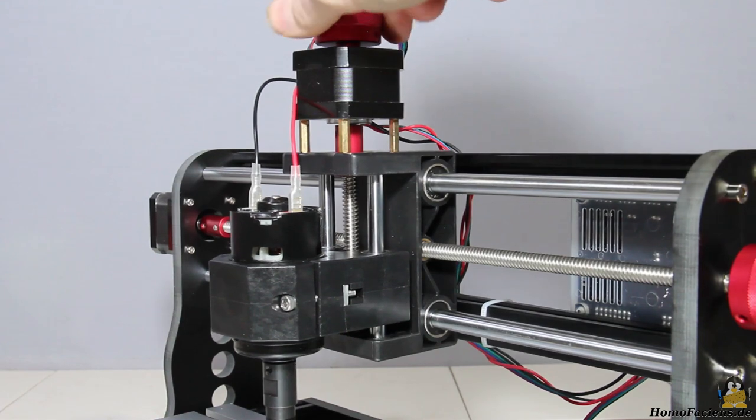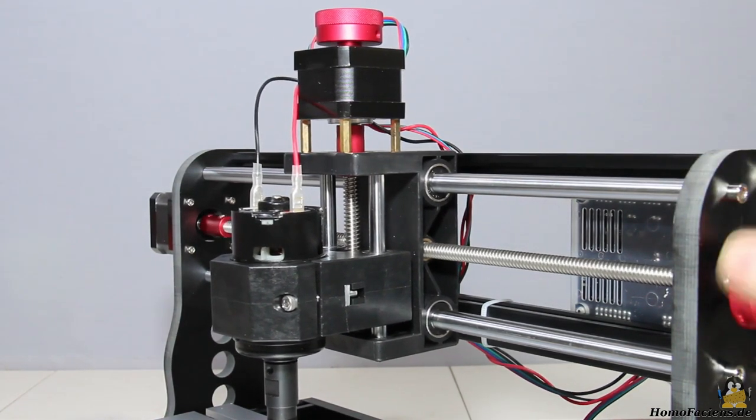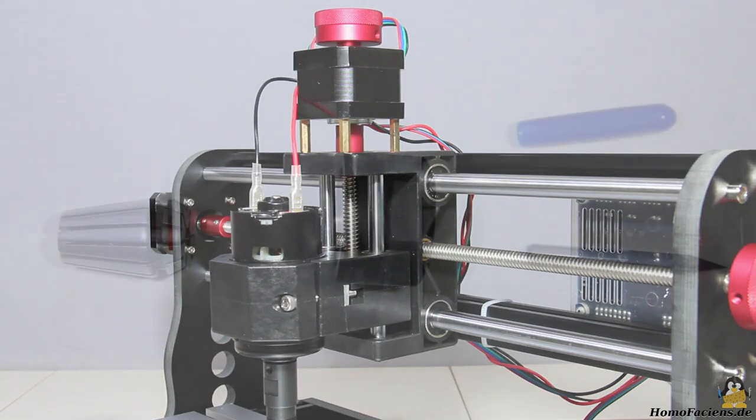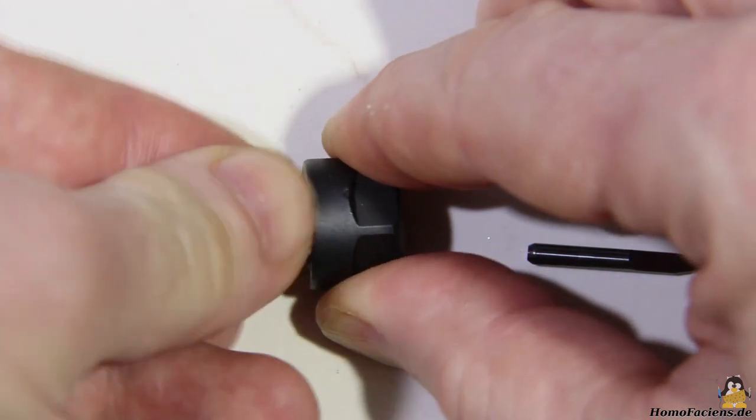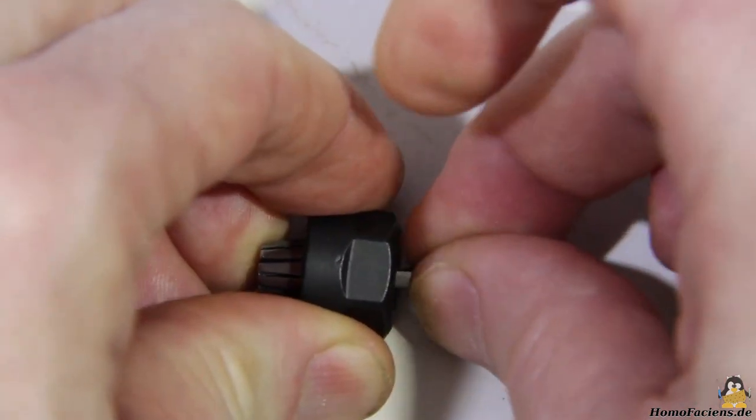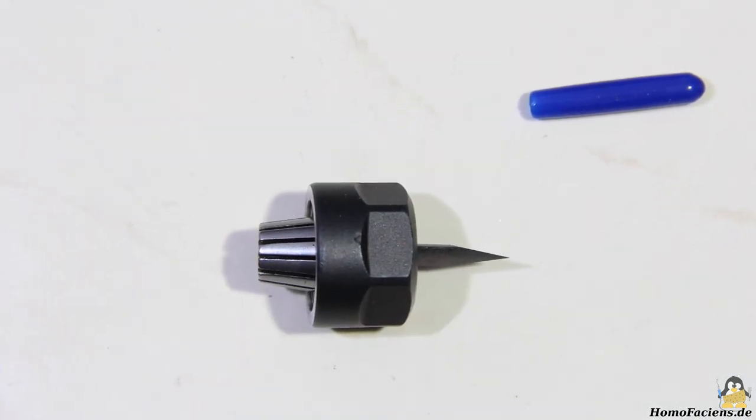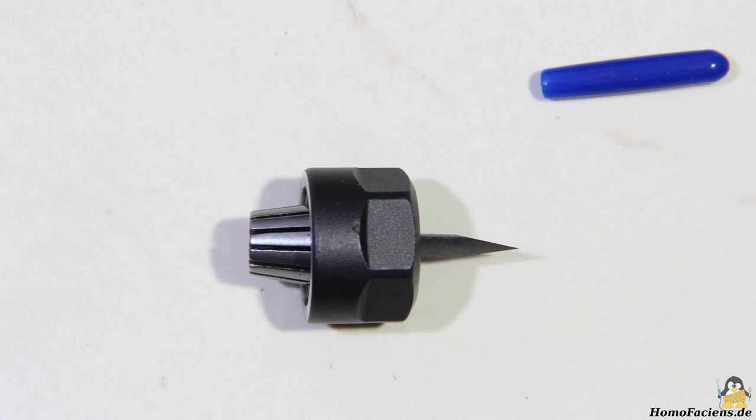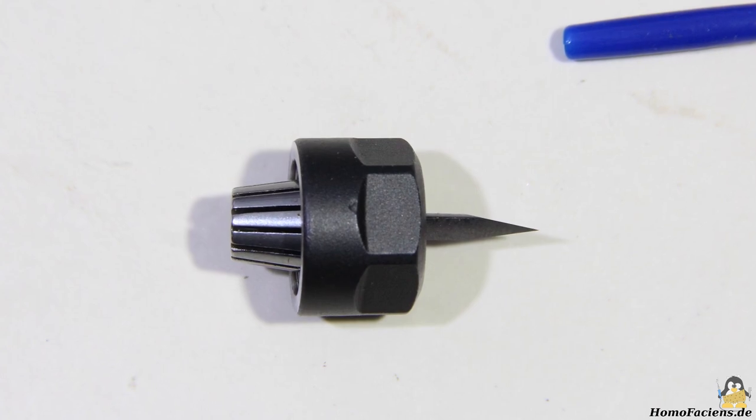I really like that all three axes can be operated manually using handwheels. The cutting tool is mounted with an ER11 collet having an insert for 3.175mm shafts. That insert must first be snapped into the corresponding nut before the tool can be inserted. The CNC comes with V-bits that can be used for engraving or cutting work.